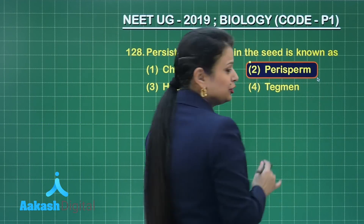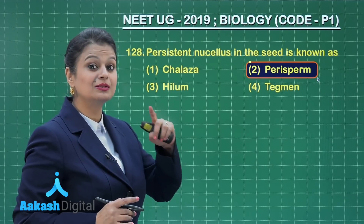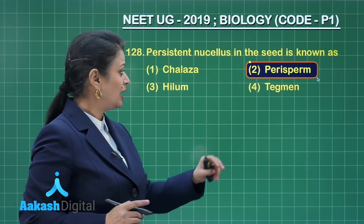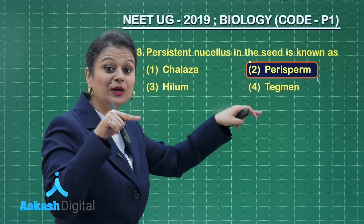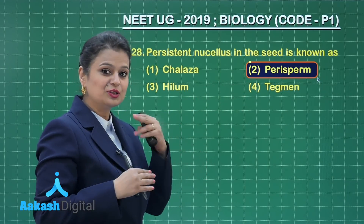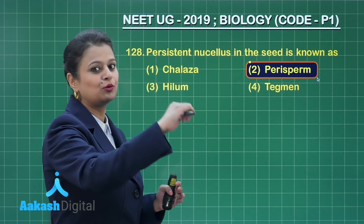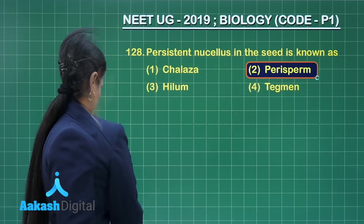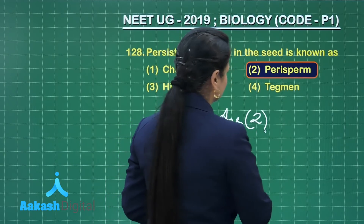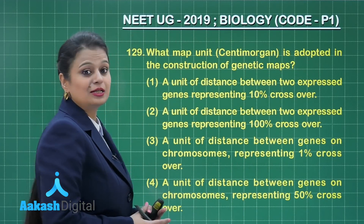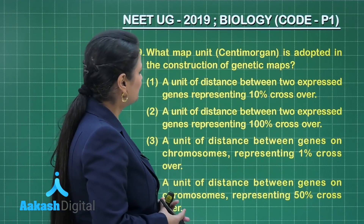The structure is known as perisperm. 'Peri' means periphery, and 'sperm' comes from 'sperma' meaning seed — so it is present at the periphery inside the seed. That is why we call it perisperm. The right answer to this question is option number two.